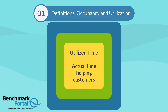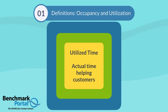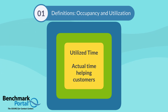Now let's draw a third box inside of the occupied time box. This is the time utilized box — the time that agents are actually utilized helping customers. This includes talk time plus after-call work time, which might be cleaning up the customer record or sending the customer a link or a fax, etc. This inner box is the core time the agent is actually doing customer-facing work. The difference between occupied time and utilized time is basically dead time the agent spends waiting for the next call. If your center uses the same agents for calls, emails, chat, etc., all of those customer-facing activities count toward utilized time.